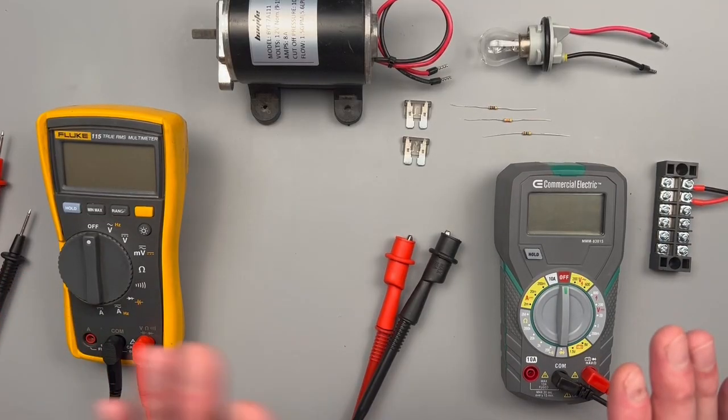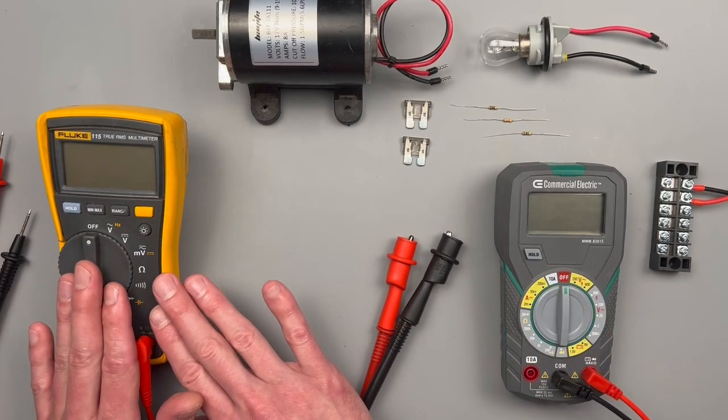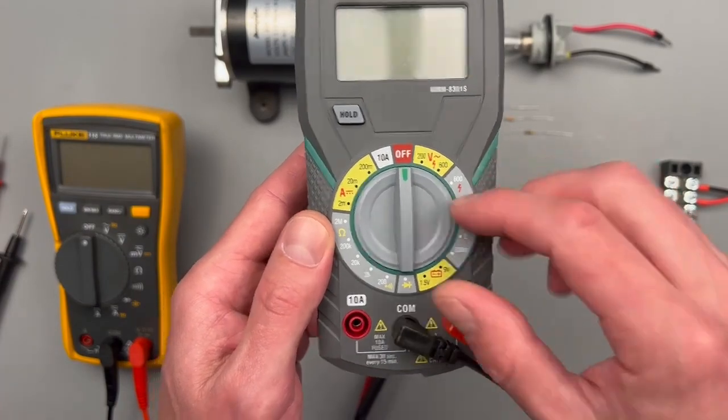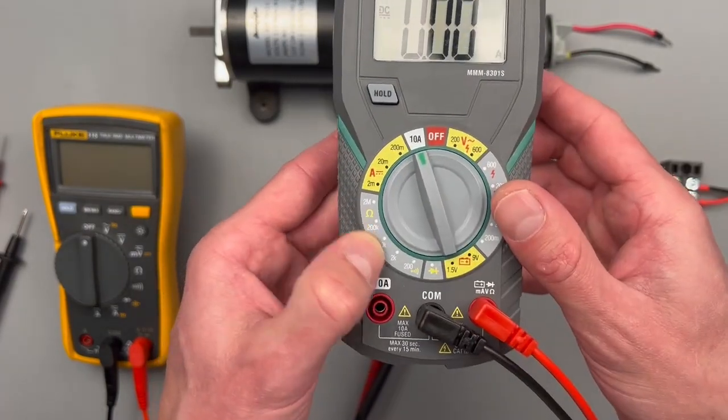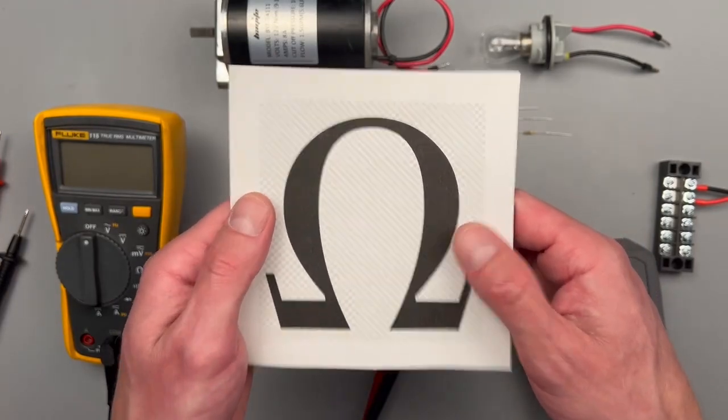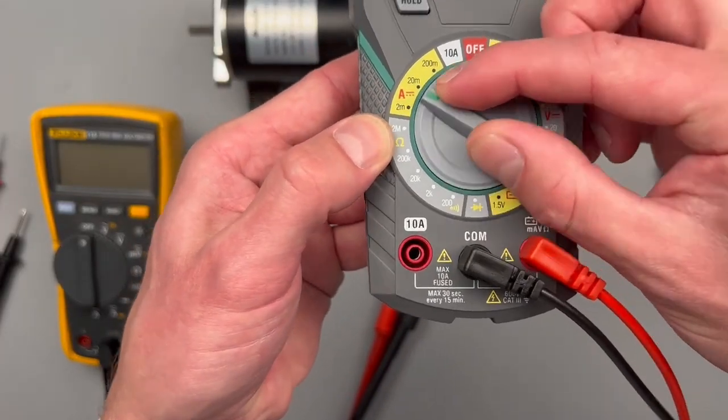This will also be covered under using a manually selected meter and an auto ranging meter. What's the difference? Well, on a manually selected meter, we're going to be focusing on this area here. Ohms is going to be this symbol on your meter.